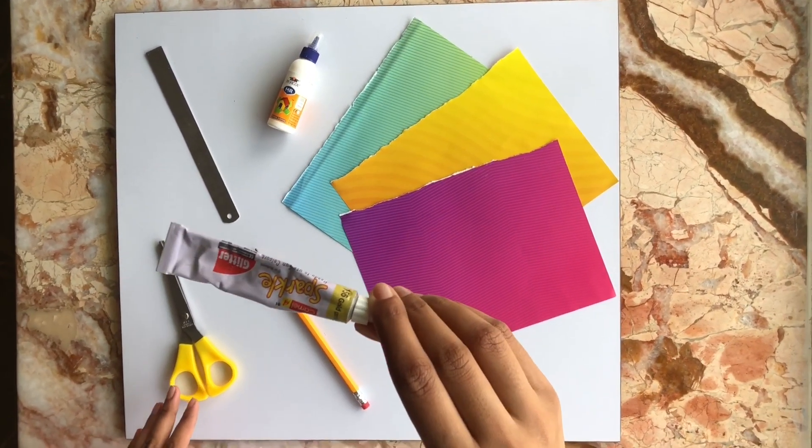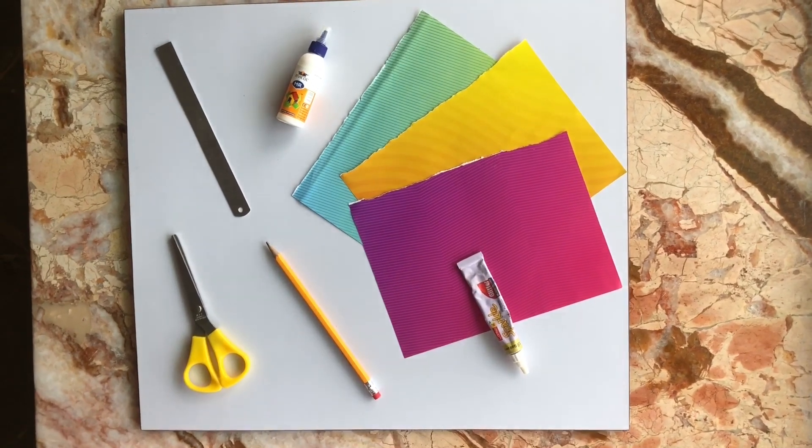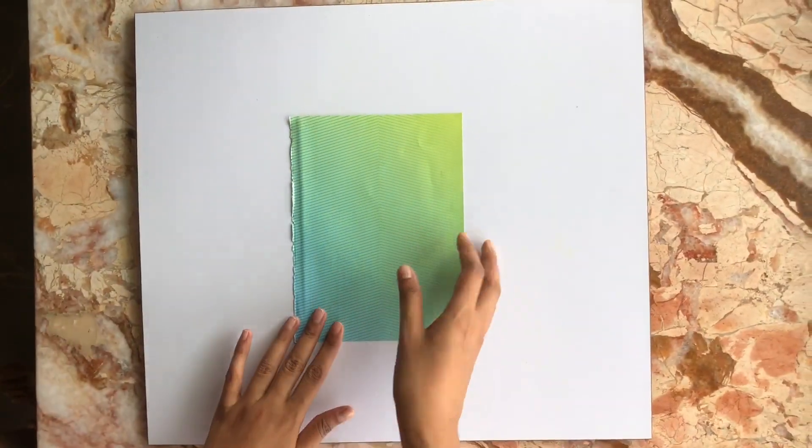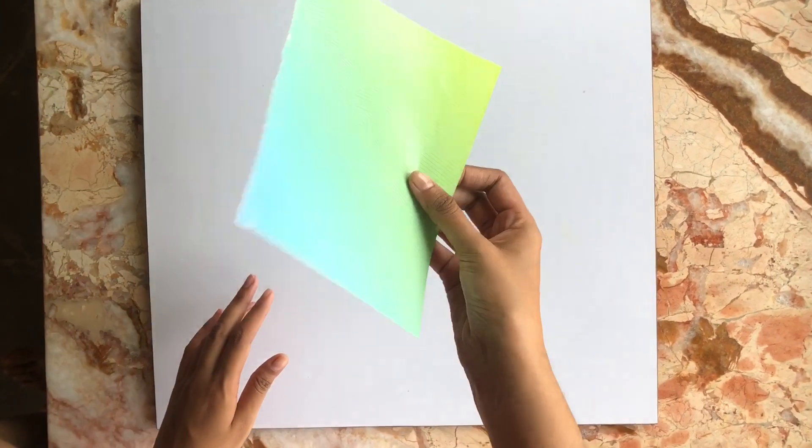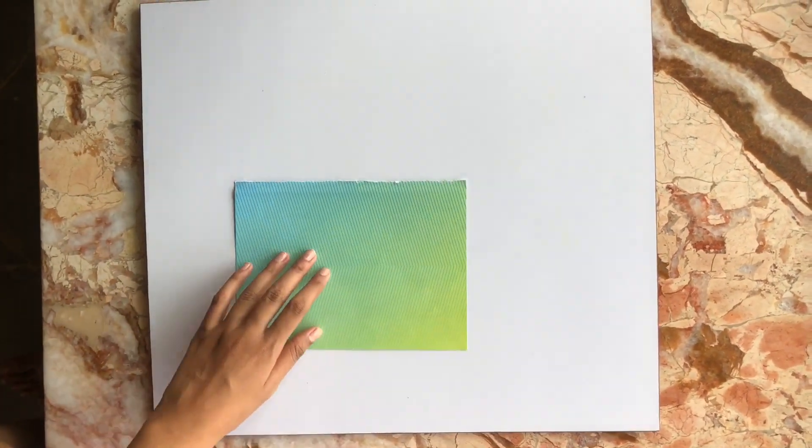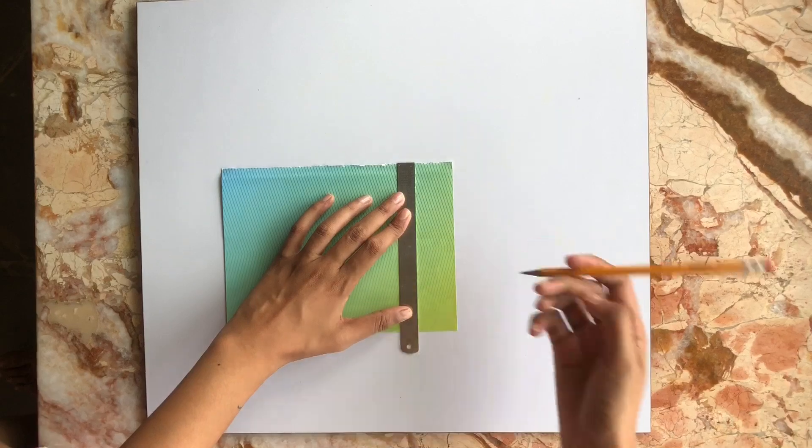Taking the green colored sheet of paper - this is a rough sheet of paper - we'll use one side of the strip and cut it out to make the leaves of the flower.